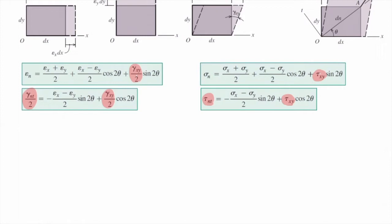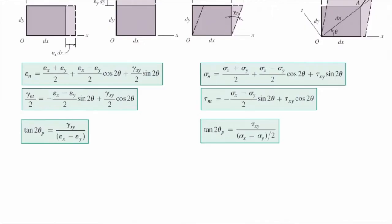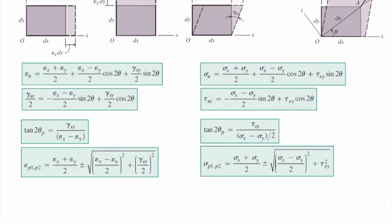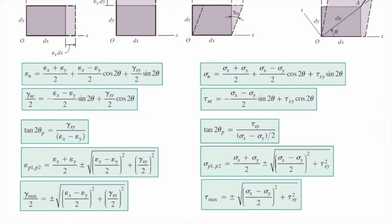This equation shows the shear strain transformation, and that is similar to the shear stress equation that we had before. Here, this equation gives me the plane at which the maximum normal stress occurs, the theta p. And this equation gives me the maximum normal strains or principal strains. Here is centroid plus and minus radius. So you can use the same Mohr circle as we learned so far. And here gives me the maximum shear strain.